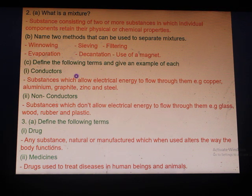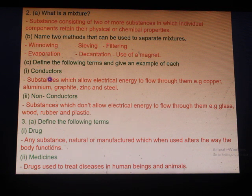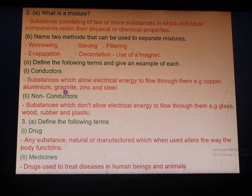Define the following terms and give an example of each. Conductors are substances which allow electrical energy to flow through them, e.g. copper, aluminum, graphite, zinc and steel. Non-conductors are substances which do not allow electrical energy to flow through them, e.g. glass, wood, rubber and plastic.